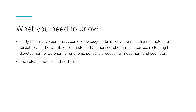You need to have a basic knowledge of brain development — from simple neural structures in the womb, including the brainstem, thalamus, cerebellum, and cortex — reflecting on development of autonomic functions, sensory processing, movement, and cognition, and also the roles of nature and nurture. Don't let the terminology put you off; once you've gone over these concepts, you'll be much more comfortable. Make sure you're on top of your terminology and you'll come away being a lot more confident in this topic.